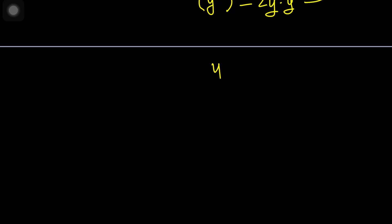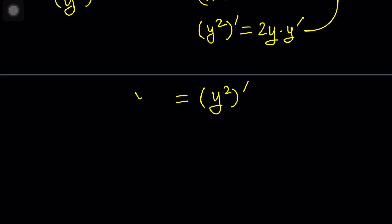So the right-hand side is the derivative of y squared, and the left-hand side is the derivative of the first derivative, which is the derivative of y prime. Great. This is nice.